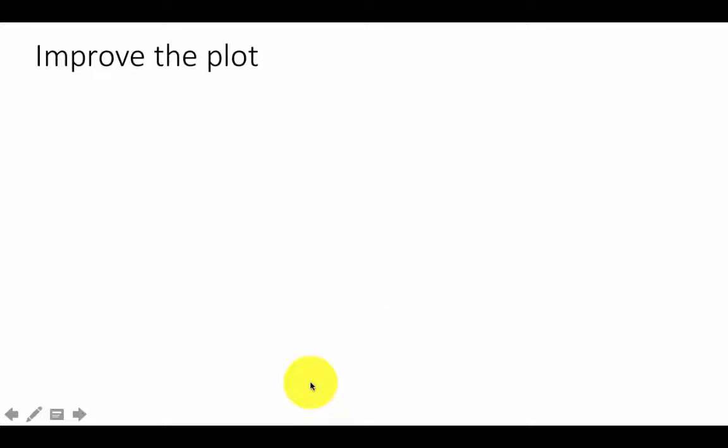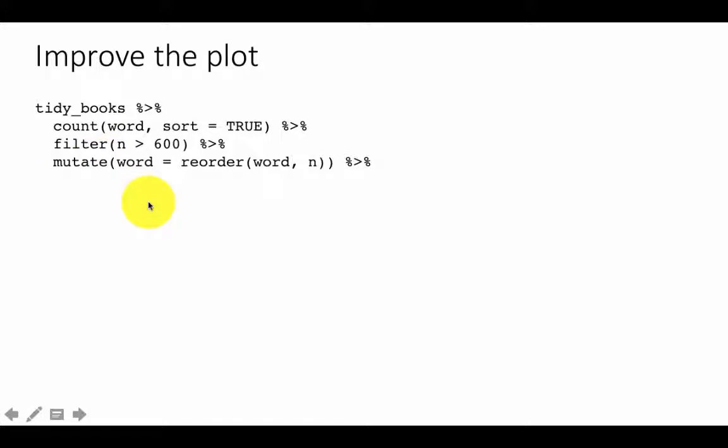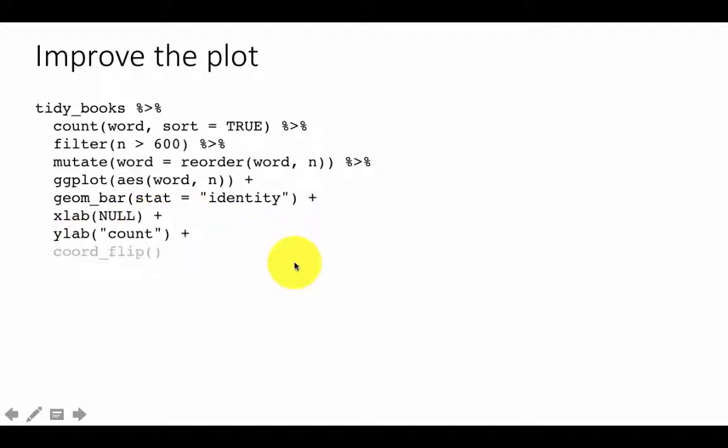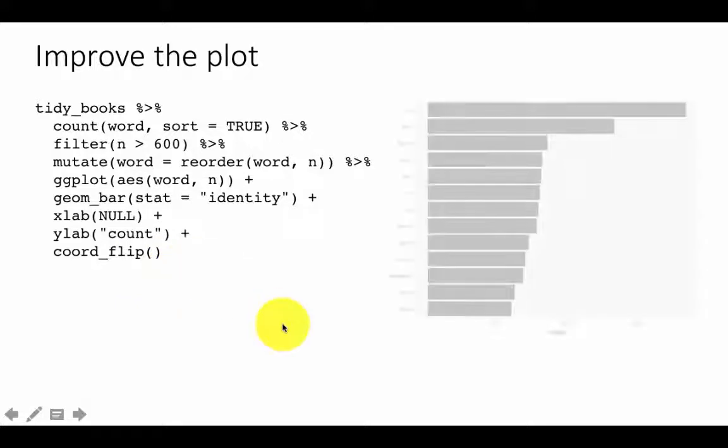So we're saying now tidy_books, count words, sort equals TRUE, filter n greater than 600, mutate word, this is where we're putting the mutation so that the ordering of the words now changes to be based on n, which of course is the result of counting. And then we do a ggplot just like before, and of course we also said that we don't want any xlab, so we say xlab NULL, and ylab I just changed it to count. Of course, remember, the xlab is actually going to occur on the y-axis because we're doing a coord_flip, and of course the ylab is going to occur on the x-axis because we flipped the coordinates.